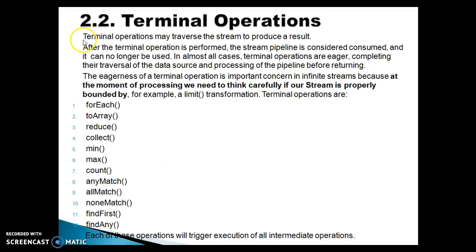Now let's talk about terminal operations. Terminal operations may traverse the stream to produce a result. After the terminal operation is performed, the stream pipeline is considered consumed and can no longer be used. Once you call the terminal operation on any stream, it is consumed and you cannot use that stream again. In almost all cases, terminal operations are eager — once you call a terminal operation, execution of the stream will be done.